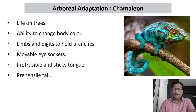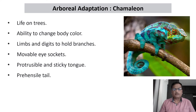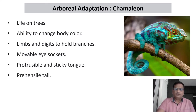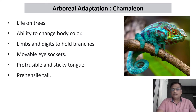Each eye can rotate separately. This ability is very helpful for the chameleon to observe and follow the movement of its prey — an insect which it is going to catch — without moving the body, so that the prey is not alerted.